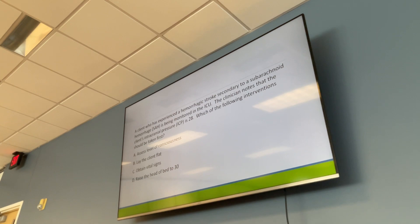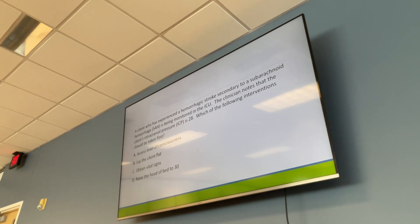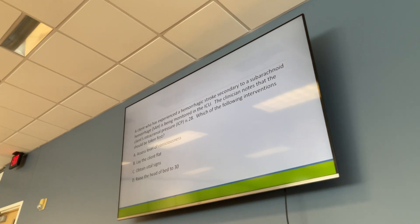For a patient with hemorrhagic stroke secondary to subarachnoid hemorrhage with an ICP of 28, the first intervention is D — raise the head of the bed to increase venous return from the brain to the heart, and maintain a low-stimulation environment without clustering cares. We do not suction because it increases the risk of aneurysm rupture.